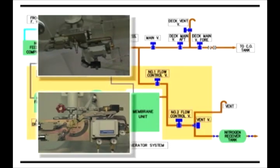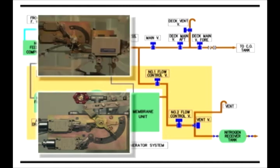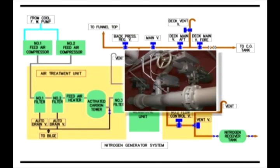The inert gas mainline is provided with a main valve and a back pressure regulating valve. Both valves automatically control the supply of nitrogen gas in 95% purity mode, according to the pressure variation on the deck mainline. The main valve is automatically closed when control air is closed. Two deck main valves and one vent valve are installed in the cargo deck area. These valves are operated exclusively — the vent valve is opened when the deck main valves are closed, and the deck main valves are opened when the vent valve is closed. The deck main valves are automatically closed when control air is closed.